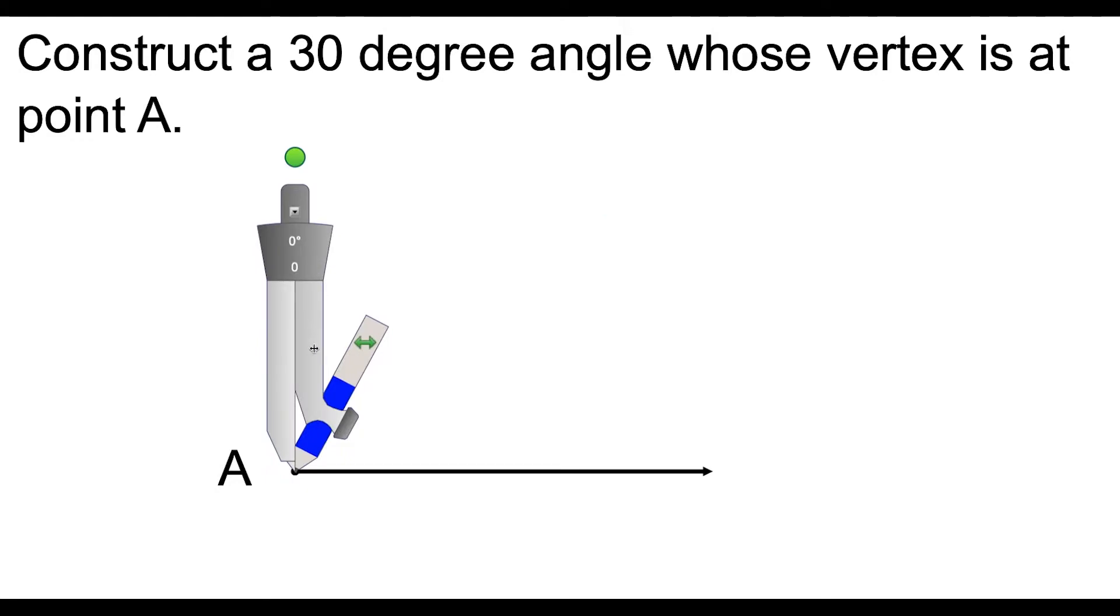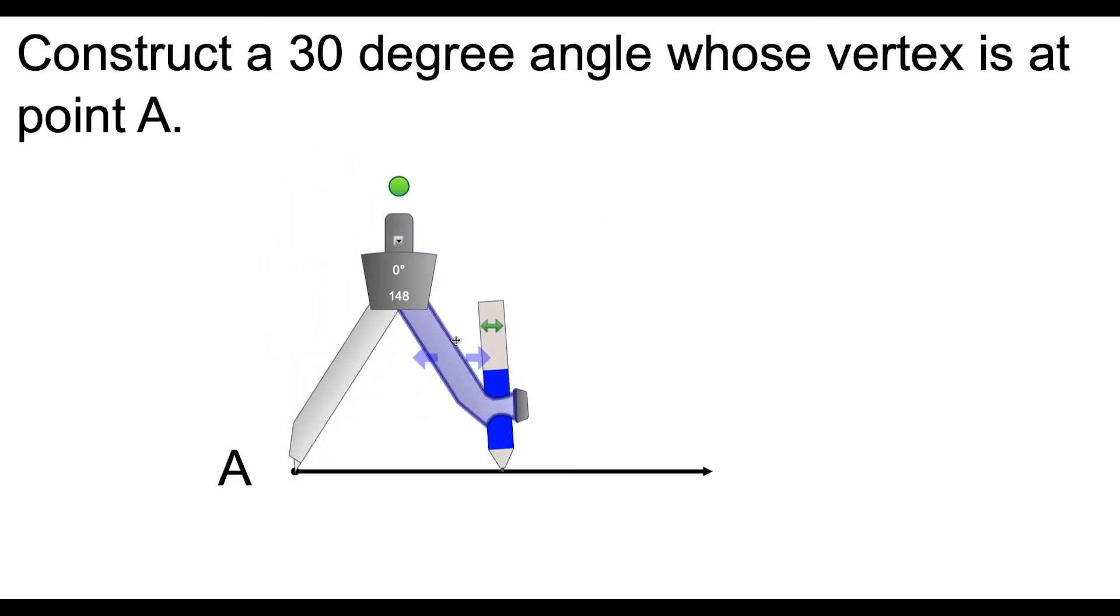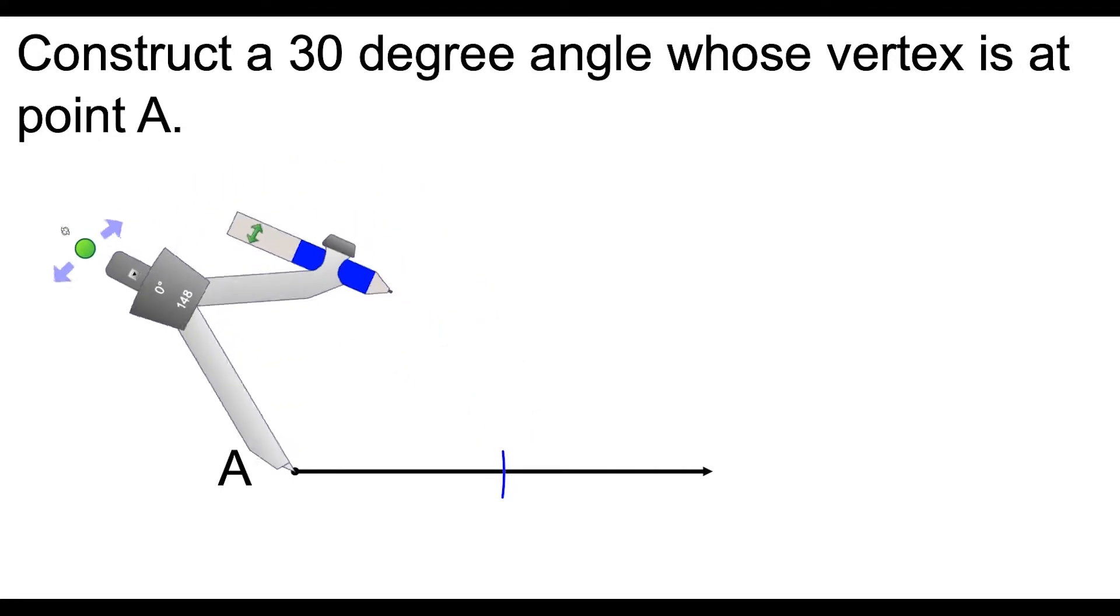So what we're going to do first is we're going to construct, we're going to do the construction for an equilateral triangle. So we just set the compass to any length that's big enough that it's going to hit this right here and we swing an arc like this so that it hits the line once, but now we could imagine that the third point of our equilateral triangle would be somewhere over here.